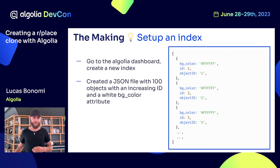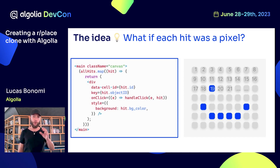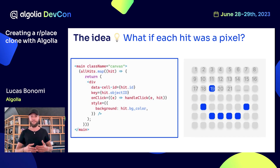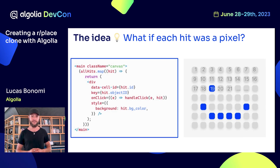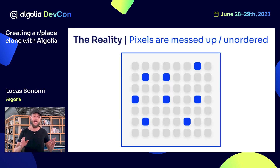Now that I have my index, I could iterate over my hits like I did in the left code sample. I used React. I get all my hits — imagine the allHits variable contains all the hits — I iterate over them and return a div which uses the background color of the hit's bgcolor attribute. Remember, my record has a bgcolor attribute, and that's the one I passed to the div. The numbers show they should be ordered, but the reality is that they're not, and that's okay.